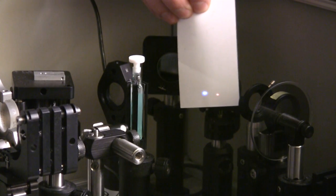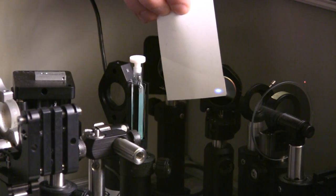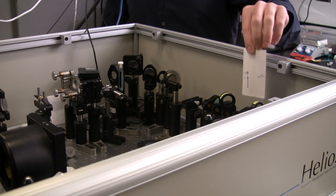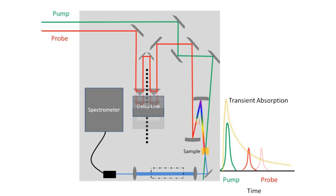The pump and probe pass through these two mirrors and overlap directly onto our sample. The pump and probe pass through the sample; the pump is then dumped since all we care about is the probe. The probe hits a mirror and goes through a series of lenses and filters into the spectrometer. In a pump-probe experiment, the pump optically excites species from the ground state to the excited state. The probe then monitors the spectral characteristics of those excited state species — taking a spectral snapshot of what those excited species are doing.